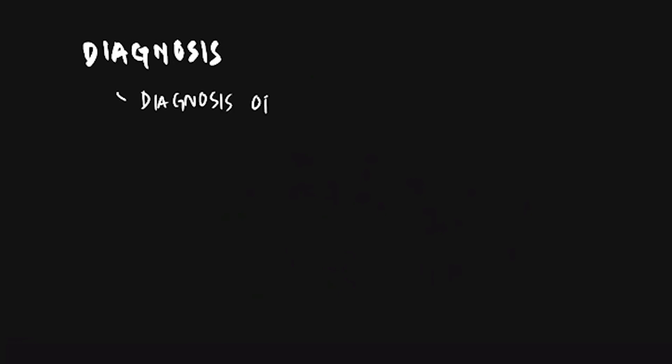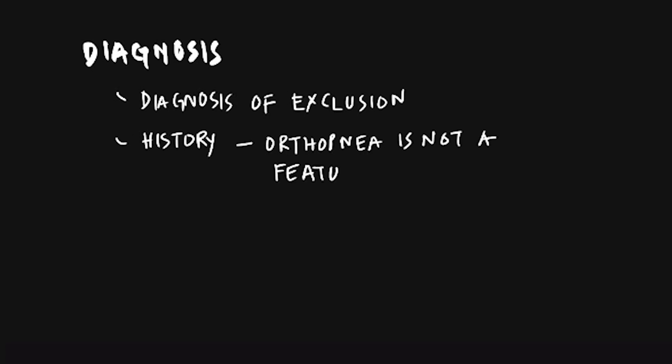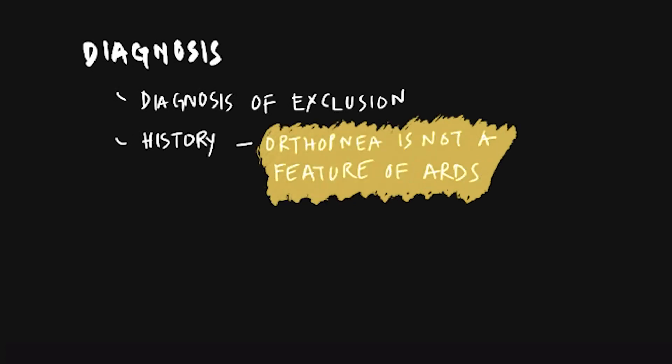Coming on to diagnosis. ARDS is a diagnosis of exclusion and a high index of suspicion is needed. History and physical examination will help in arriving at the diagnosis in most cases. The most important differential to consider is acute cardiogenic pulmonary edema, which can easily be differentiated on clinical history — for example, orthopnea may be present as a feature of cardiac failure but is not seen in ARDS.